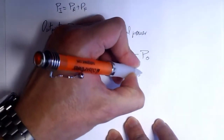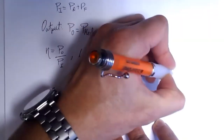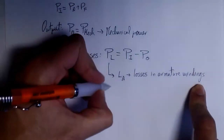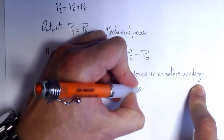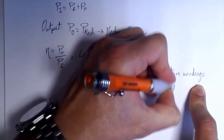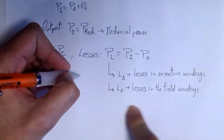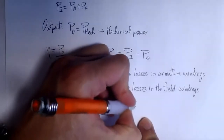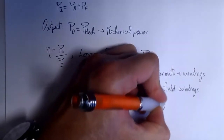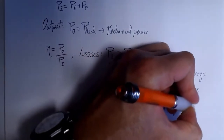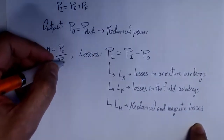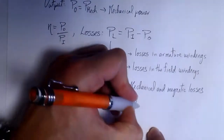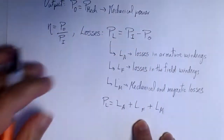There are in general three types of losses. First, electrical losses in the armature windings — some power is dissipated by the wire there. Second, power dissipated in the field windings, which we call LF. And finally, mechanical and magnetic losses, such as friction. The total losses PL can be computed as the sum of losses in the armature windings, losses in the field windings, and the mechanical losses.